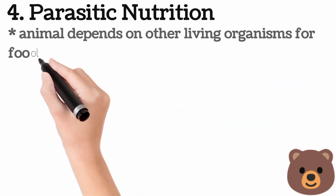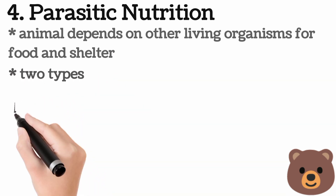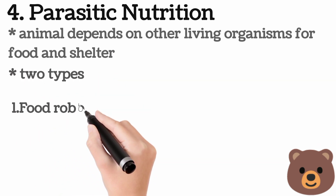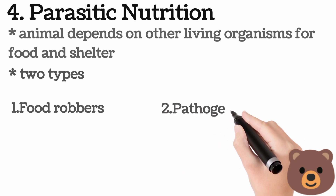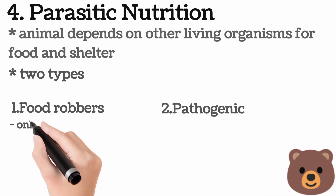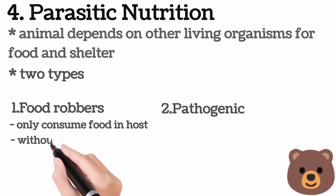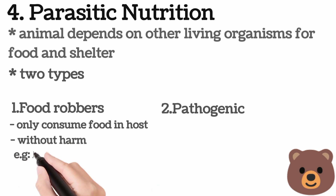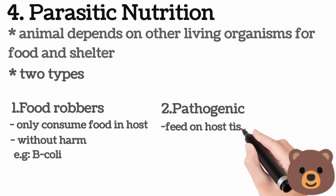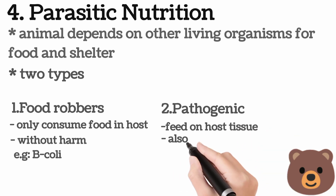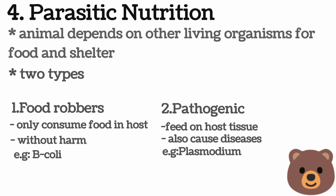Parasitic nutrition: the animal depends on other living organisms for food and shelter. Two types of parasites are present in protozoa. Number one is food rovers, which only consume food in the host without causing harm — Balantidium coli is an example. Number two is pathogenic parasites, which feed on host tissue and also cause disease — example is Plasmodium.